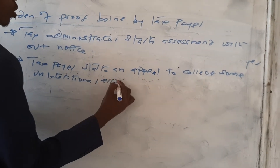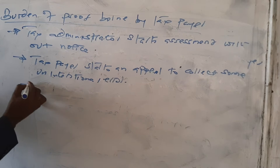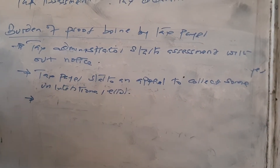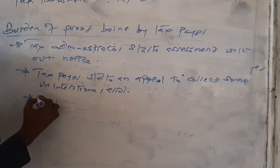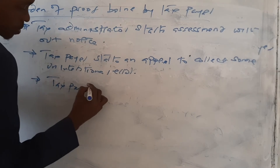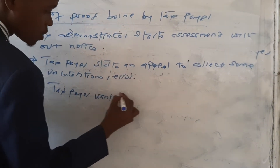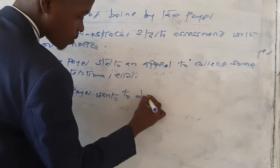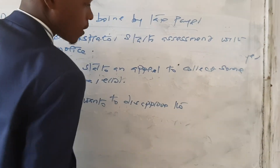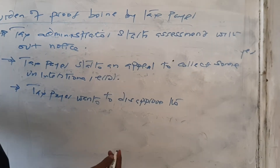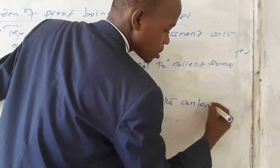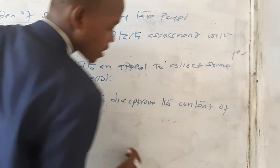Another burden of proof borne by the taxpayer is when the taxpayer wants to disprove the content of an affidavit — that is, to challenge the evidence presented against them.